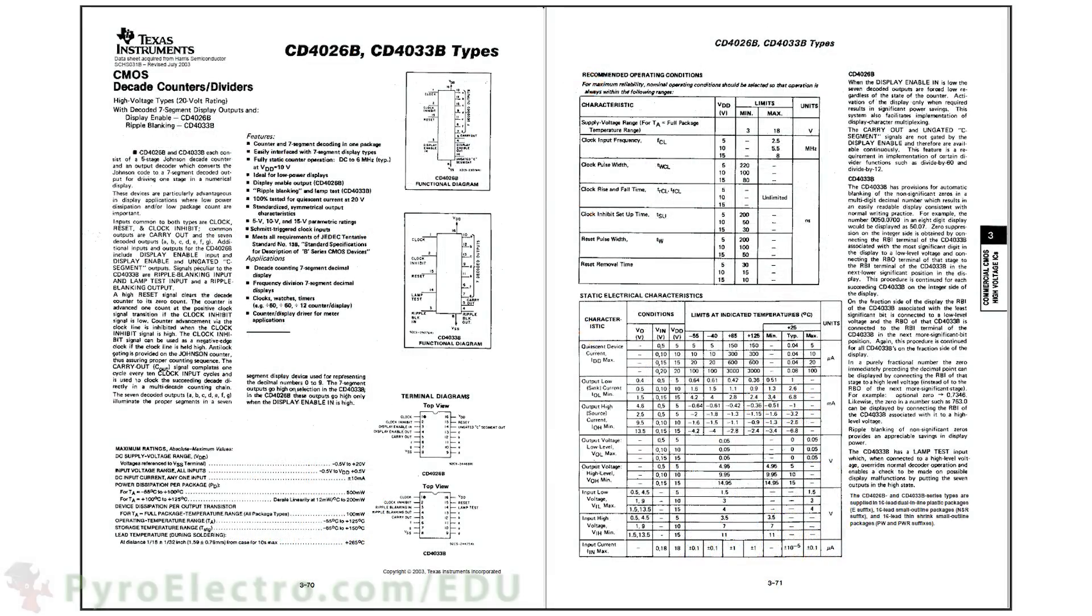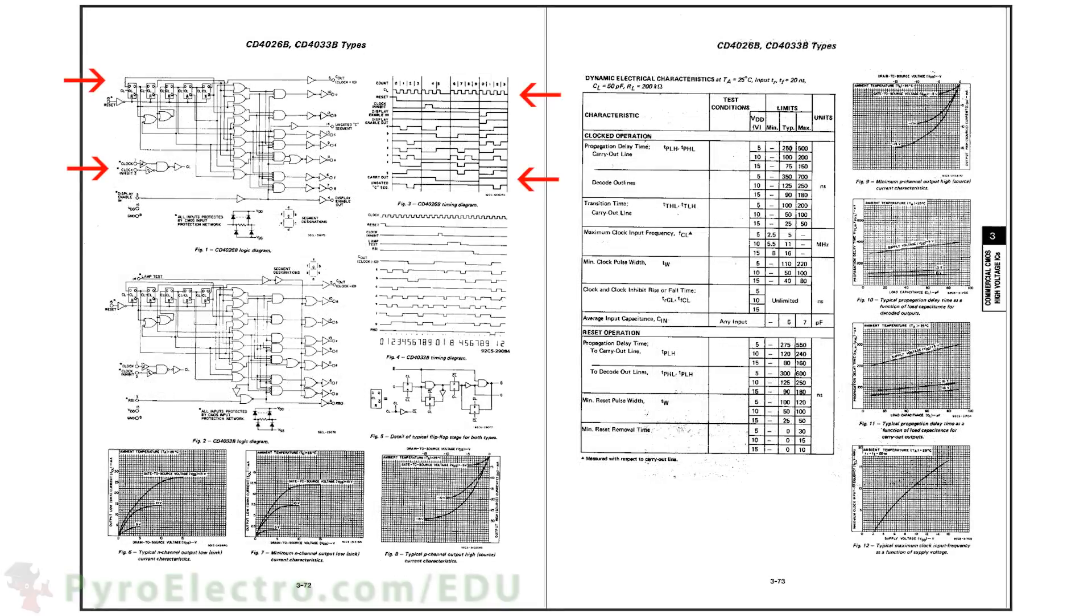The next interesting device is the 4026 4 bit counter and 7 segment LED driver. This device combines a lot of functionality together that we didn't see in any 7400 logic device. Again, the truth table and logic diagram show us exactly how this device works, and what outputs to expect given a single clock input. We'll use this device later in an experiment to really get a feeling for what it does.